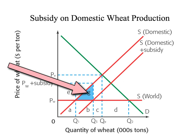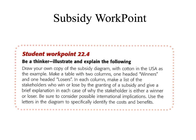I hope you found this video helpful. A good practice exercise: draw your own copy of the subsidy diagram using cotton in the U.S. as the example. Make a table with two columns — winners and losers. In each column, list the stakeholders who win or lose from the granting of a subsidy, give a brief explanation of why, and be sure to consider possible international implications. Use the letters in the diagram to specifically identify the costs and benefits.